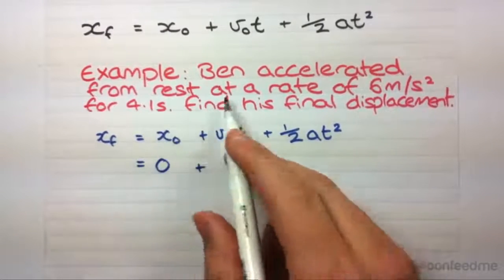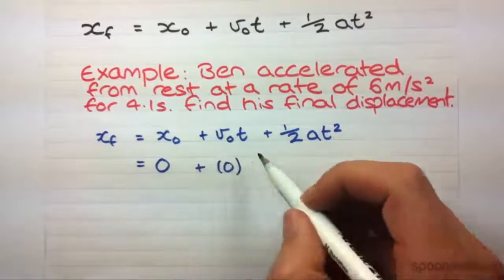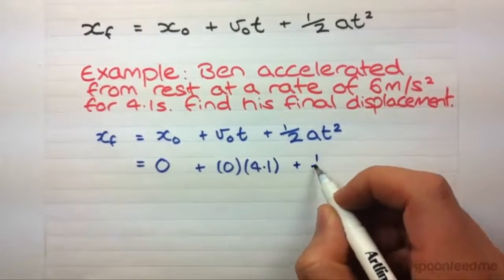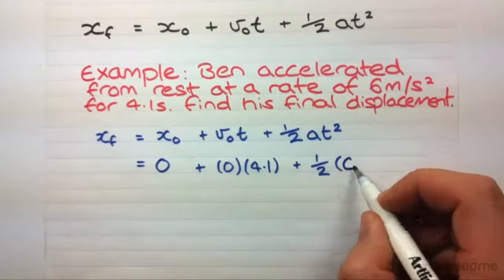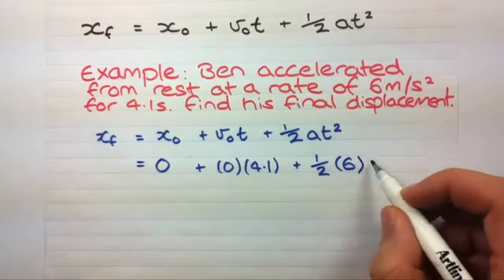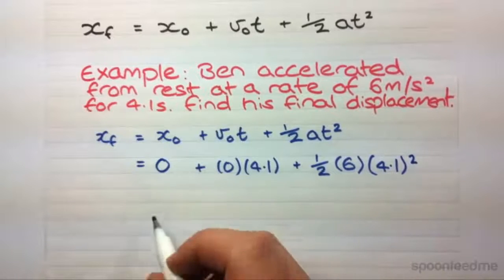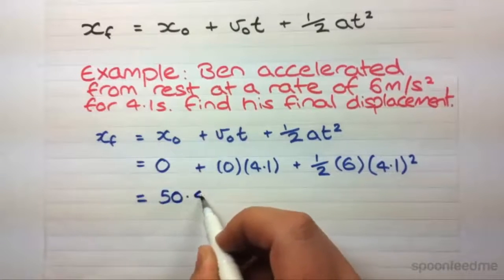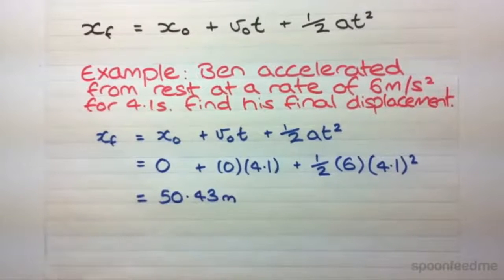Initial velocity from rest means that his initial velocity was zero. Took him 4.1 seconds. Acceleration is 6 metres per second squared. And the time, once again, 4.1 seconds squared. Now, if you type that into a calculator, you'll find that it's 50.43 metres that Ben travelled and that is how we use that first equation.